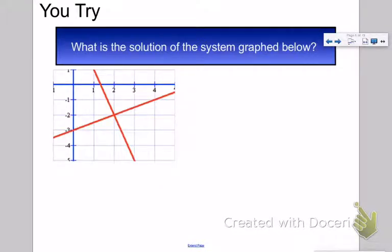What is the solution of the system graphed below? Well, that's where they intersect, so I need to find the point of intersection, which is at x equals 2, y equals -2. And I always write my answer as an ordered pair with parentheses and commas.